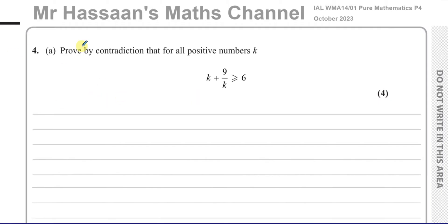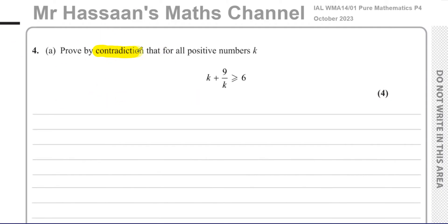In this particular question, we must prove by contradiction — we can't just use P2 algebraic methods. The question states: for all positive values of k, prove that k + 9/k is greater than or equal to 6. We know k is greater than zero, and that's important here.